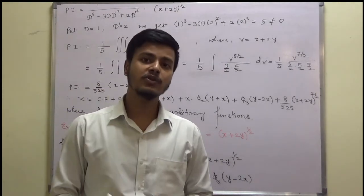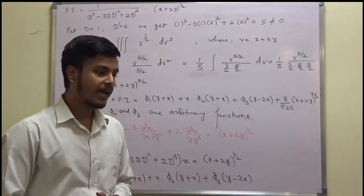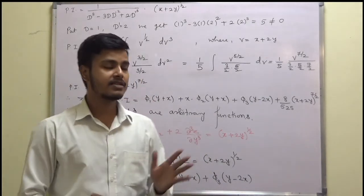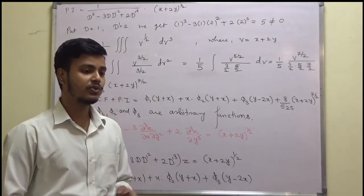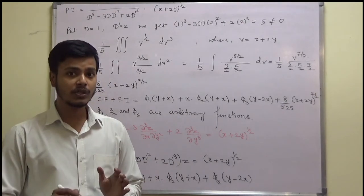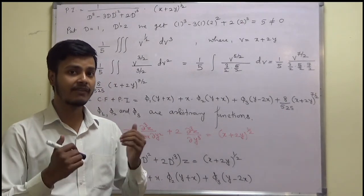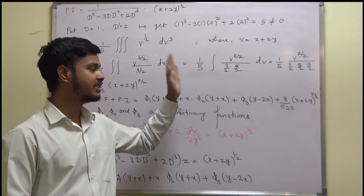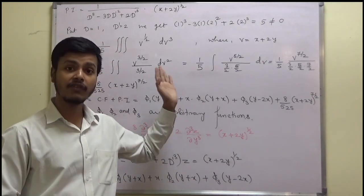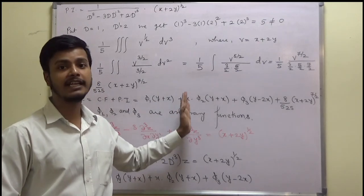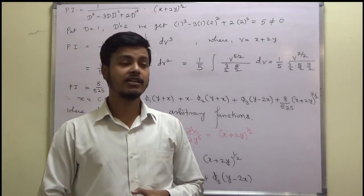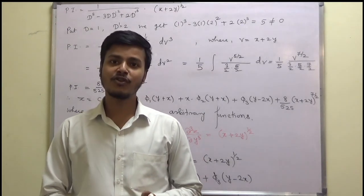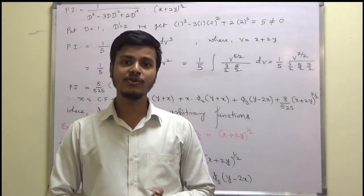Therefore, the general solution is z = CF + PI = phi_1(y + x) + x · phi_2(y + x) + phi_3(y - 2x) + (8/525)(x + 2y)^(7/2), where phi_1, phi_2, and phi_3 are arbitrary functions. This completes the solution. I hope you have got the idea and can now apply the same procedure to different problems. Thank you for watching this learning video and have a good day.